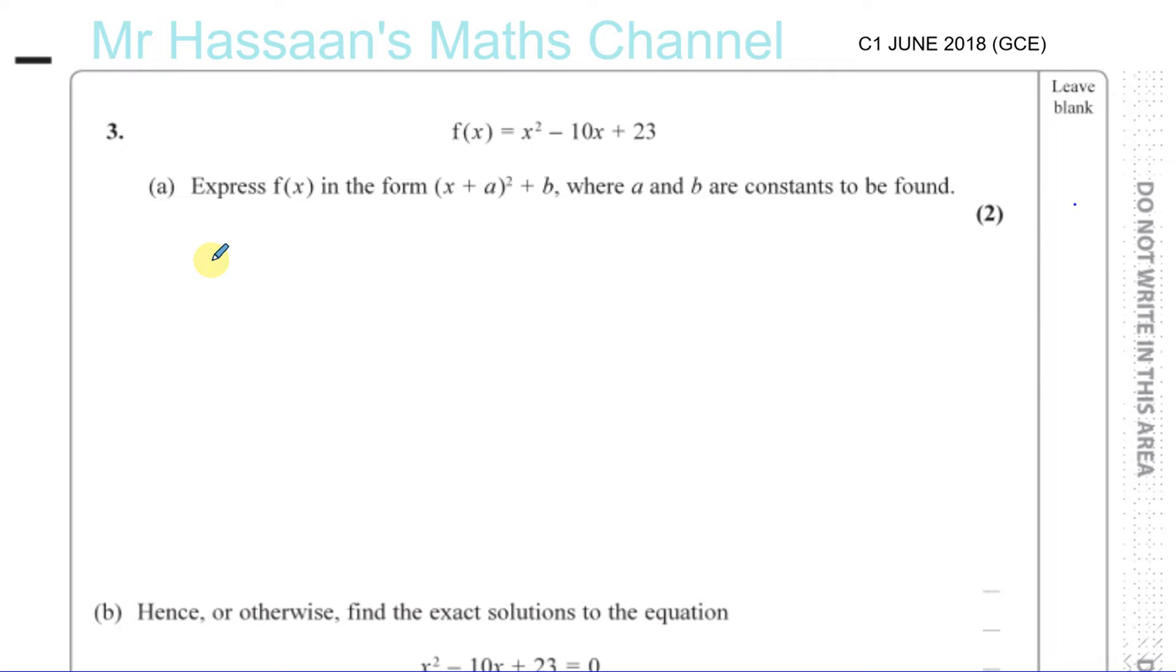I'm going to be going over this question now. Here we are asked to express the function f(x), which is given as x squared minus 10x plus 23, in the form (x + a) squared plus b, where a and b are constants to be found. So basically they're asking us to complete the square. So we start off with f(x) equals x squared minus 10x plus 23. This is exactly how we want it to be before we start completing the square. We don't have any coefficient in front of the x squared except for one, which is what we need.